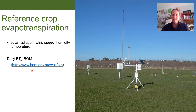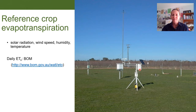You can click on the Victorian tab and look up your nearest weather station. For those in the Goulburn Valley, I would tend to look at the Tatura weather station rather than the Shepparton weather station, simply because the Shepparton weather station is at the airport, whereas the Tatura weather station is at the Tatura smart farm, so it's a little more reflective of orchard conditions.